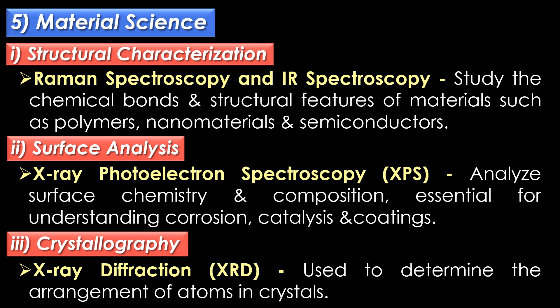In structural characterization, Raman spectroscopy and IR spectroscopy are used to study the chemical bonds and structural features of materials such as polymers, nanomaterials and semiconductors.